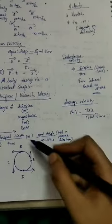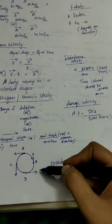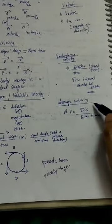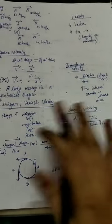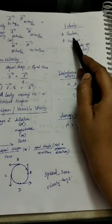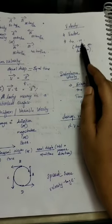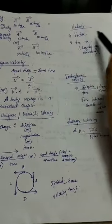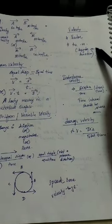Average velocity is calculated for the whole path — for example, from A through B, C to D — and equals total displacement divided by total time taken. Velocity is a vector quantity, so it can take positive, negative, and zero values depending on its direction.